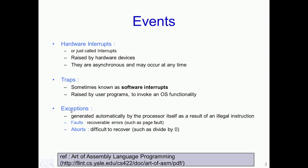The third type of event is known as exceptions. These events are generated automatically by the processor itself as a result of an illegal instruction. There are two types of exceptions: faults and aborts. A very common example of a fault is a page fault. Faults are exceptions from which the processor could recover — for instance, when a page fault occurs, the OS loads the required page from swap space into RAM. On the other hand, an abort exception, such as a divide-by-zero exception, is very difficult to recover from, and typically the program would be terminated.